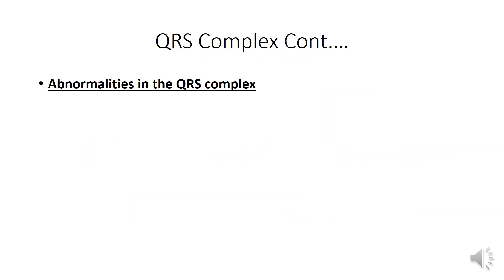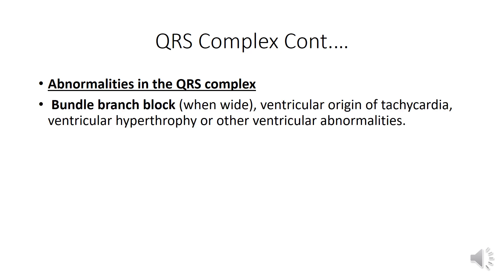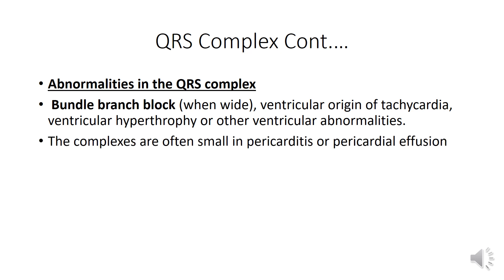Let us discuss about the abnormalities present in the QRS complex: bundle branch block, ventricular origin of tachycardia, ventricular hypertrophy or other ventricular abnormalities. The complexes are often small in pericarditis or pericardial effusion.